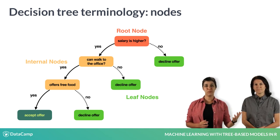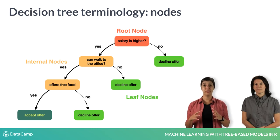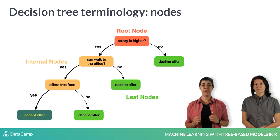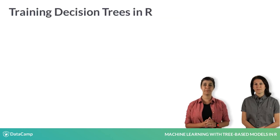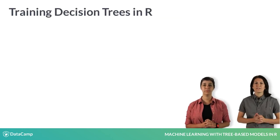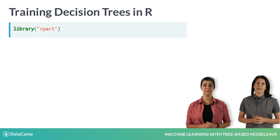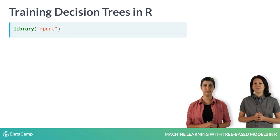The nodes at the bottom are called leaf nodes or terminal nodes. Nodes that are neither the root node nor the leaf nodes are called internal nodes. The root and internal nodes have binary test conditions associated with them, and each leaf node has an associated class label. One of the most popular packages for decision trees in R is the rpart package, which you'll use in the first two chapters for training both classification and regression trees.